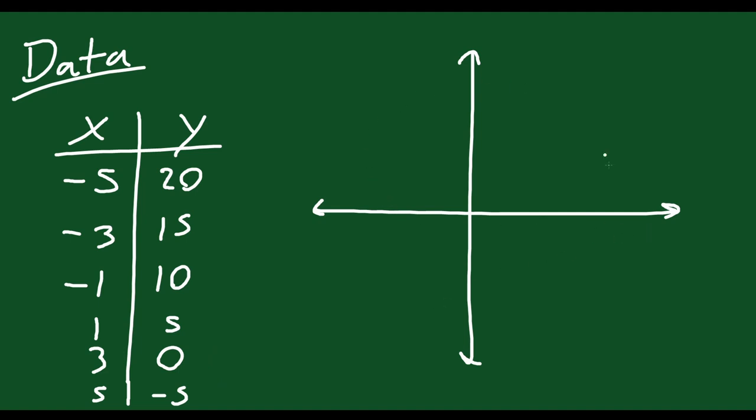So if you look at your x values, you have everything from -5 to 5. So I'm just going to label on this graph, you know, 1, 2, 3, 4, 5. Do it on the other side as well. -1, -2, -3, -4, -5. Try to keep it consistent.